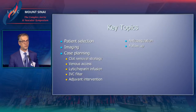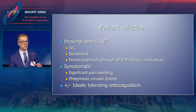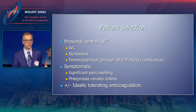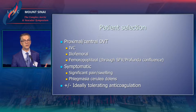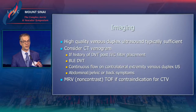I want to discuss patient selection, imaging, case planning, and hopefully anticoagulation and follow-up. For patient selection, most of us would agree that we want to make sure we're treating central DVT, as Aki just showed us, in patients who are symptomatic — ranging from significant pain and swelling to full-out phlegmasia. And ideally, when choosing patients to treat endovascularly, you want them to be able to tolerate anticoagulation.